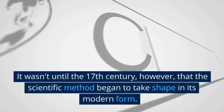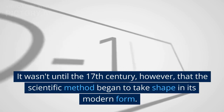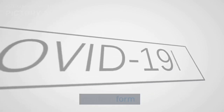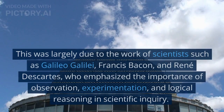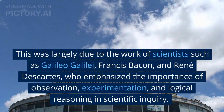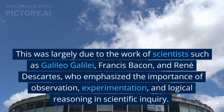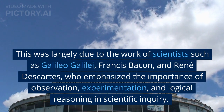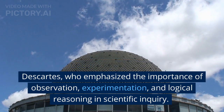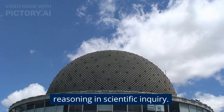It wasn't until the 17th century, however, that the scientific method began to take shape in its modern form. This was largely due to the work of scientists such as Galileo Galilei, Francis Bacon, and René Descartes, who emphasized the importance of observation, experimentation, and logical reasoning in scientific inquiry.